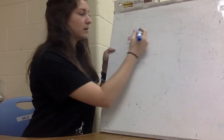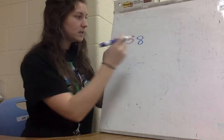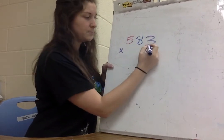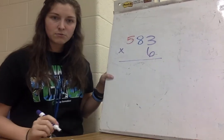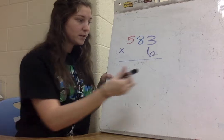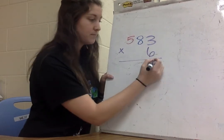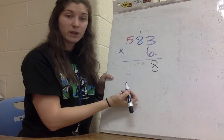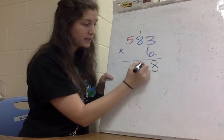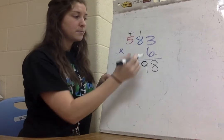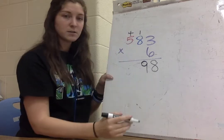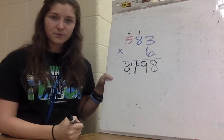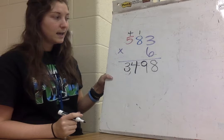Let's try another three-digit by one-digit problem: 583 times 6. Starting with the ones, I go 6 times 3, which is 18 — put the 8 down, carry the 1 up. Then 6 times 8 is 48, plus 1 is 49 — 9 goes down, 4 goes up. Then 6 times 5 is 30, plus 4 is 34. So my answer is 3,498.